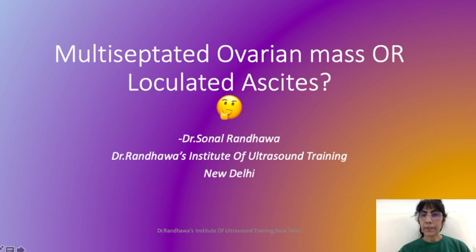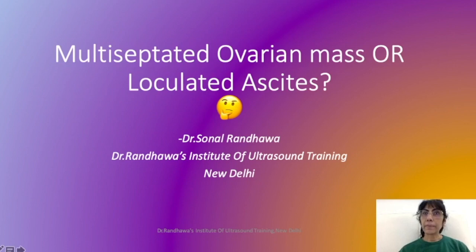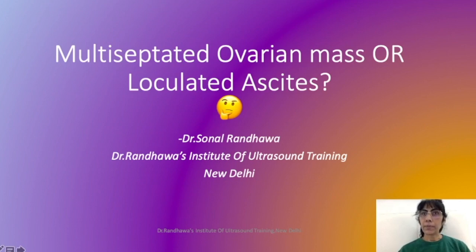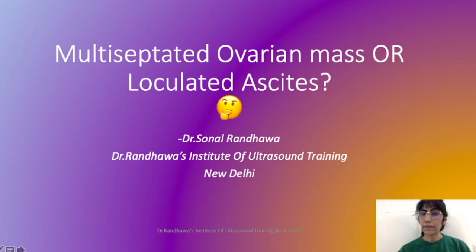Today I've chosen a particular small thing that I've noticed where people make a mistake many times — the confusion when scanning whether this is a multiseptated mass or loculated ascites. Many times these kinds of mistakes land you into major issues. I remember a long time back, there was one patient who came to us and she had been diagnosed as tuberculosis, thinking this was loculated ascites, when actually it was an ovarian cyst adenoma. It is a major mistake if you do not differentiate between a multiseptated mass and loculated ascites.